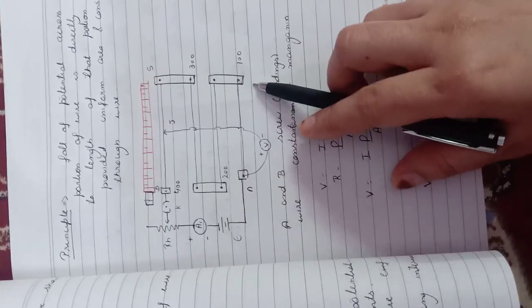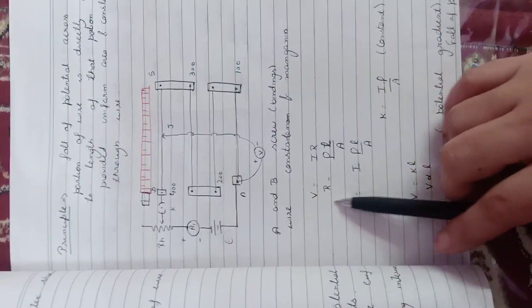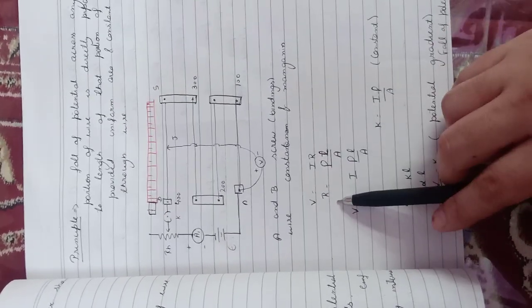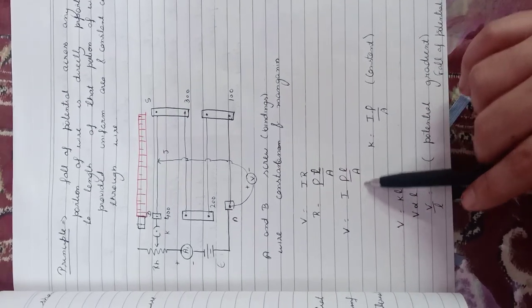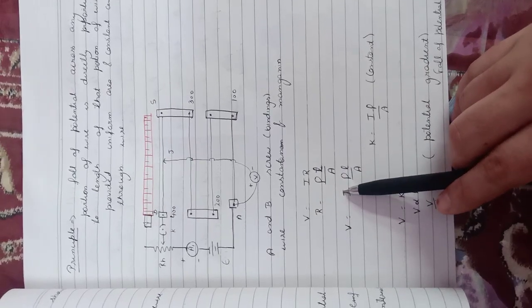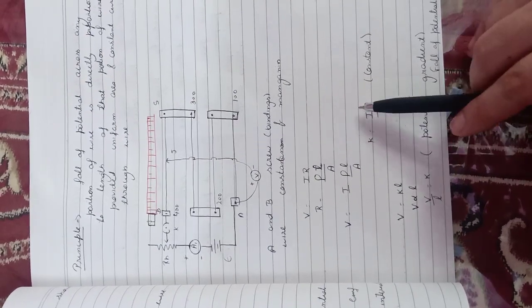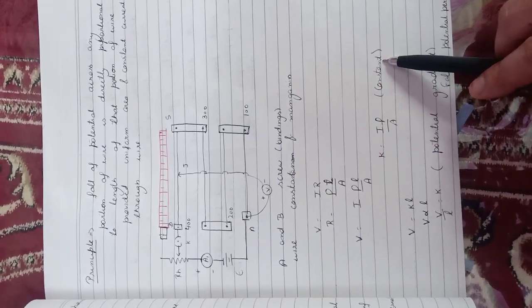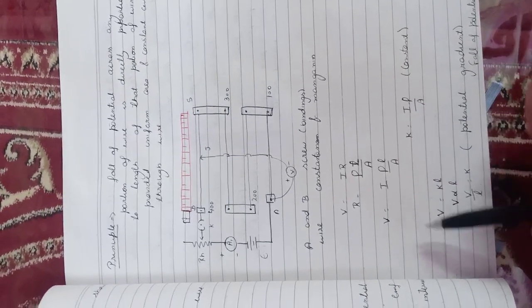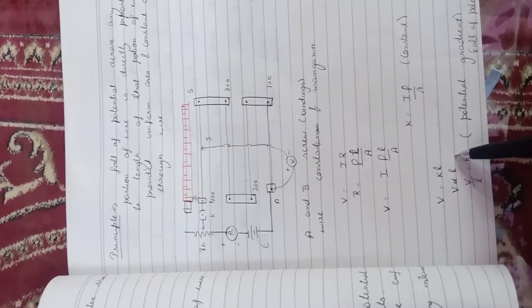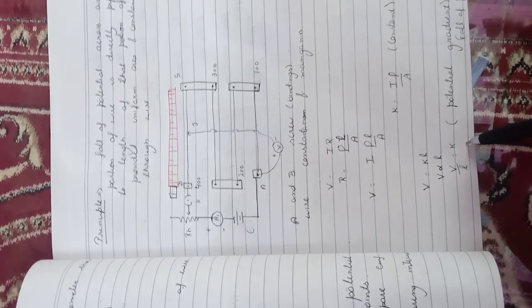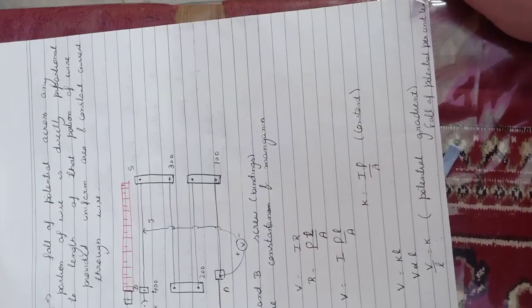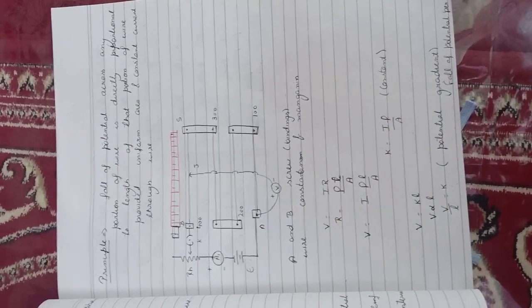A and B are binding screws where the wire can be connected. Using Ohm's law, V equals I×R, and R equals rho×L upon A, so V equals I×rho×L upon A. Since the area is constant, the current is constant, and resistivity is already constant for the wire, these three terms — I, rho, and 1/A — are all constant, denoted by K. K is known as the potential gradient. So V equals K×L, meaning V is directly proportional to L.